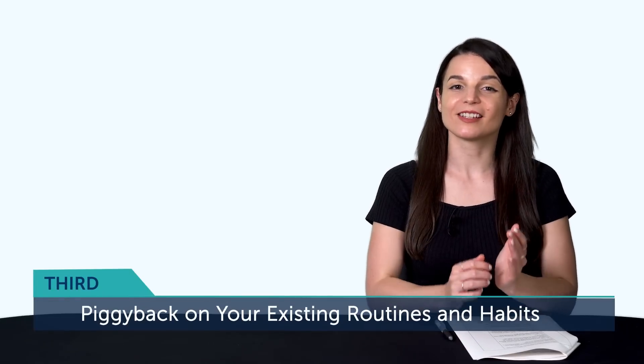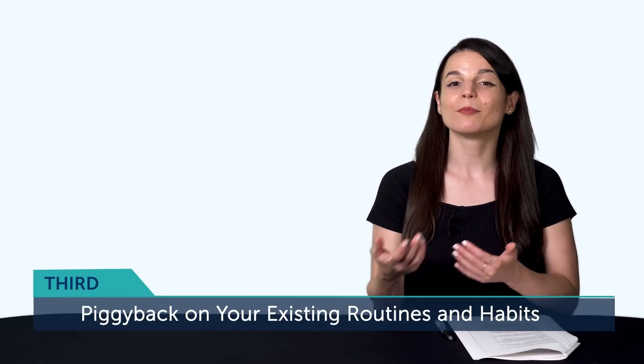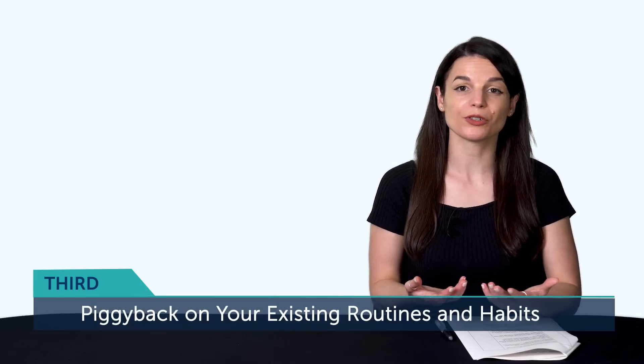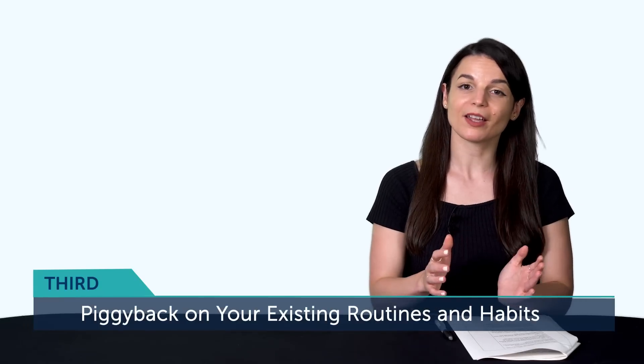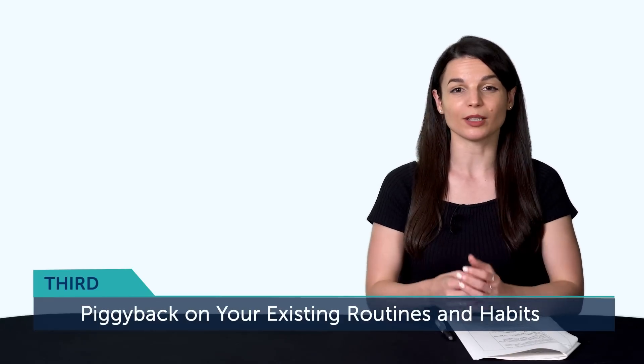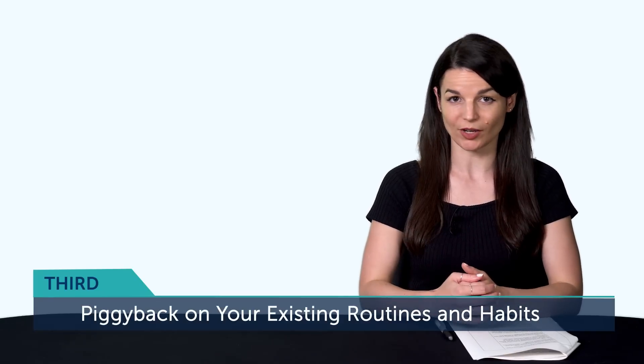Third, piggyback on your existing routines and habits. In other words, combine language learning with the routine that you already do, like commuting to work, doing chores, or taking a walk. That way, your brain automatically starts associating your commute time as language time, and you can easily do a lesson without having to push and motivate yourself. So map out your daily schedule from morning to night and make it detailed. 8am, wake up. 8:30am, breakfast. Commute at 9am. Arrive at work at 9:30am. Lunch at 1pm, and so on. Then look where you can multitask and stick language learning in.